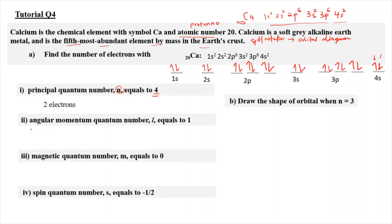For question number 2, we need the number of electrons with angular momentum l equal to 1. When l equals 1, it refers to the P orbital. The P orbitals we have are 2p and 3p. Counting all the electrons in those P orbitals, we get 12 electrons in total.